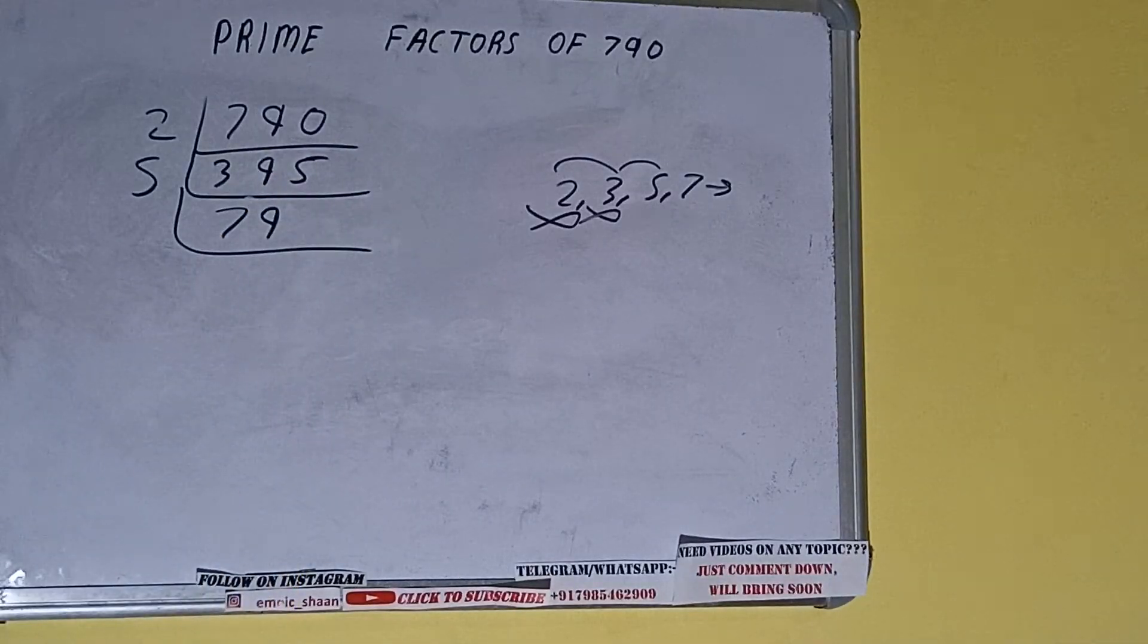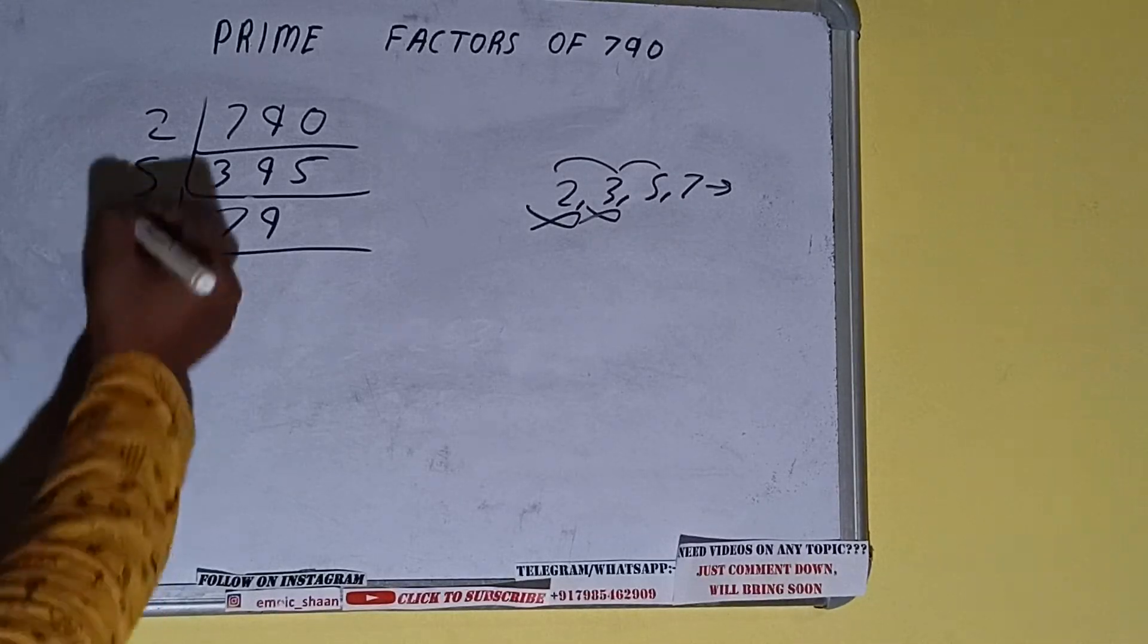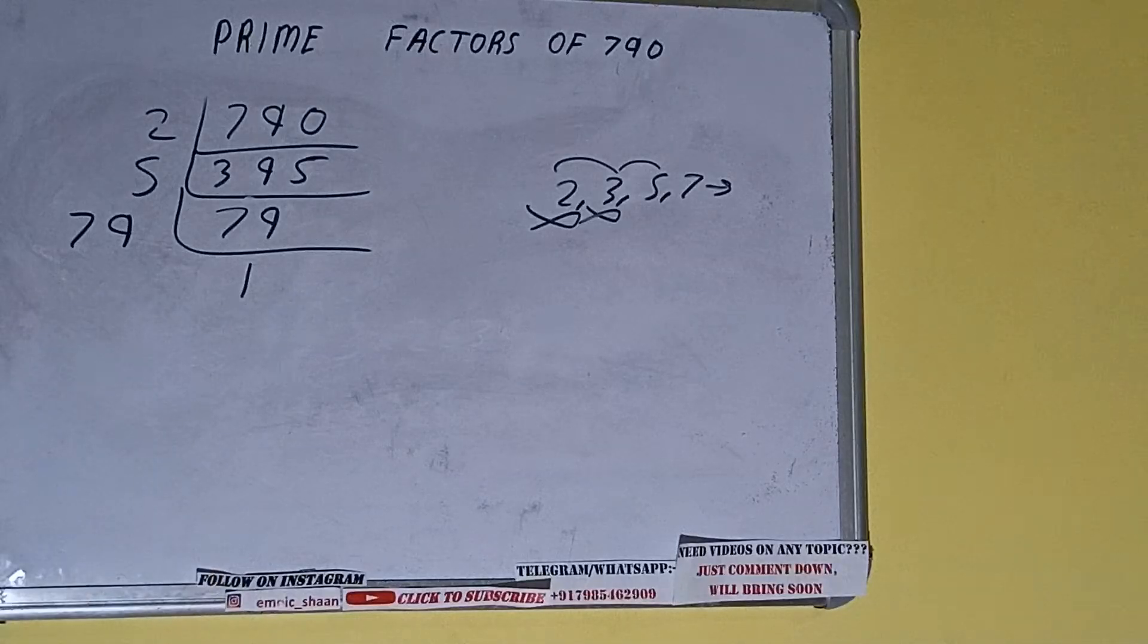9 fives are 45. We'll be having 79, and 79 is further not divisible by 5. And 79 is also a prime number. So it is only divisible by itself, that is 79, and once we do so we'll be getting 1.